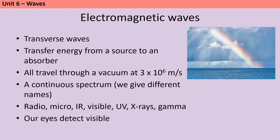Electromagnetic waves are transverse waves that transfer energy from the source to an absorber. All types of EM wave travel at the same velocity through a vacuum or through air. Electromagnetic waves form a continuous spectrum — there isn't something fundamentally different about a radio wave and an infrared wave, we just give them different names depending on their frequency and wavelength. Going from long to short wavelength — or low to high frequency — the groups are: radio waves, microwaves, infrared radiation, visible light, ultraviolet, X-rays and gamma rays. Within visible light we start with red (longer wavelengths) and finish with violet next to ultraviolet.